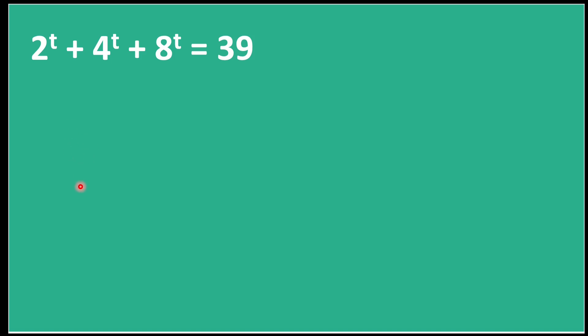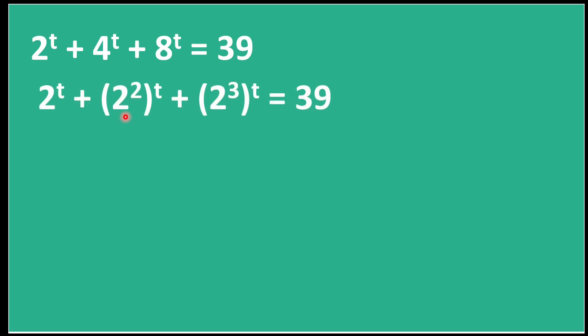Hello everyone. Today we have this question: 2^t + 4^t + 8^t = 39, and we have to solve this question. So let's start the solution.